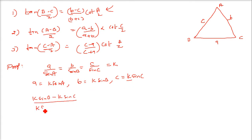So in denominator also you get k sine b plus k sine c and here you have cot a by 2. So you can take k common from here, k common from here. So k will get cancelled and this will be sin b minus sin c.